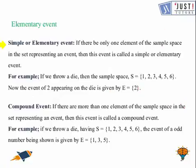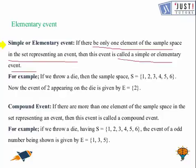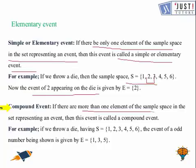Let us see what is an elementary event. Here, simple or elementary event: if there is only one element of a sample space in the set representing an event, then it is called a simple or elementary event. For example, if we need to find the probability of the event of 2 appearing on a die, since 2 appears only once in the sample space, therefore it is an elementary event. A compound event has more than one element. For example, if a die is thrown and we look at the event of an odd number, there are three odd numbers — which is more than one — so therefore it is a compound event.